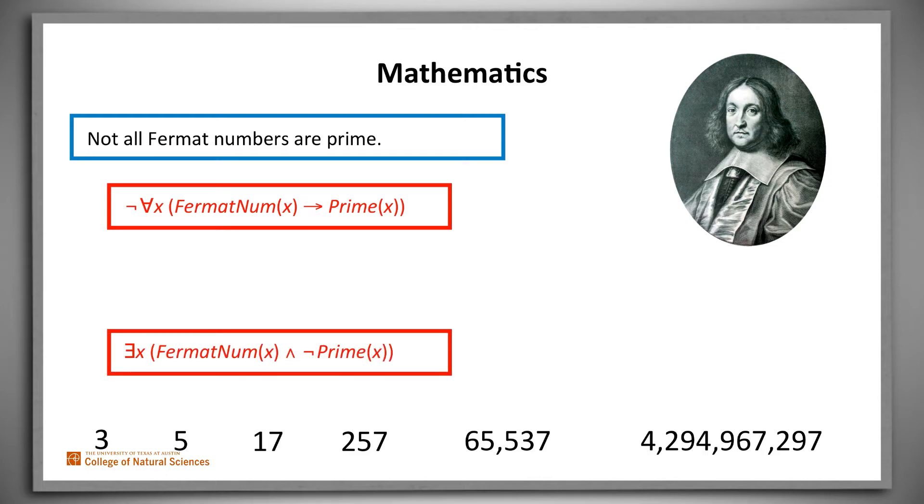But there's another equally natural way to make the same claim. Read it as there exists a number that is both a Fermat number and not a prime. We know that this claim is true because of non-prime Fermat numbers like this one, which is too big for Fermat to have been able to compute.